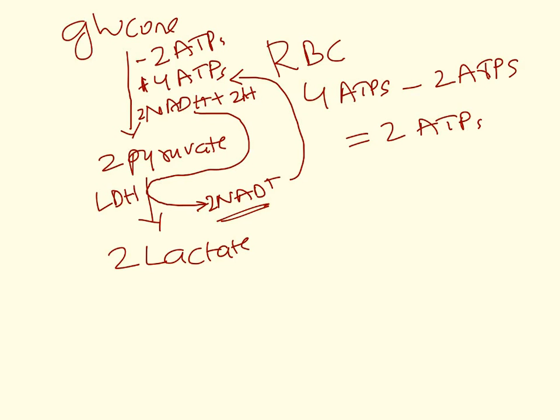Overall, when 1 glucose is converted to 2 lactate, the red blood cell gets only 2 ATPs, which it uses to maintain its membrane integrity and other ATP-dependent needs. Glucose is the main energy fuel for red blood cells, and it gets only 2 ATPs from 1 glucose.